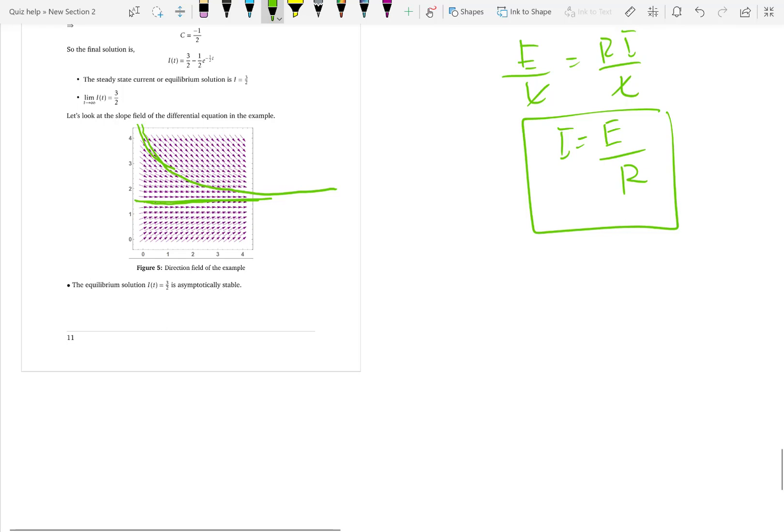And if you have a current less than 3 over 2, the current will increase and approach 3 over 2 and then will not change anymore. So, that is the general behavior of what is happening.